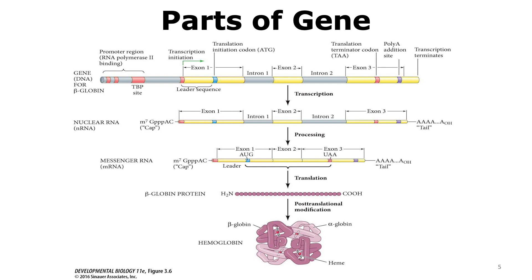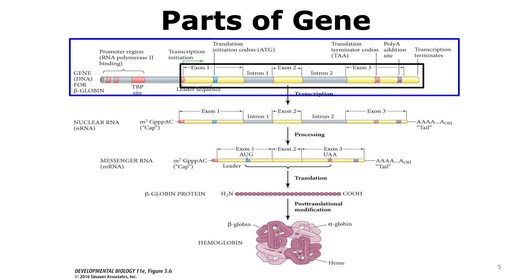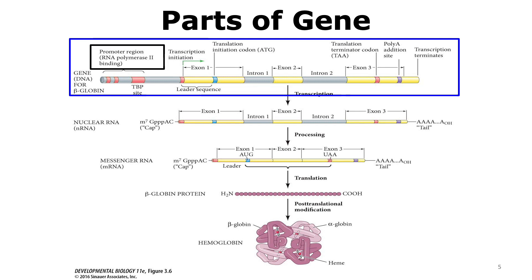Let us first look at the different parts of DNA that comprise a gene. As an example, we are taking the beta-globin gene. The part in the black box is the part of the DNA that will actually be transcribed to form RNA. In order for transcription to occur, there has to be a promoter upstream of the transcription start site of that DNA. This promoter enables the enzyme RNA polymerase to bind to DNA so that transcription can occur.